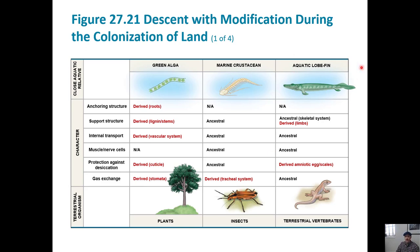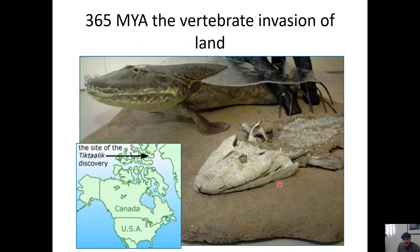When we look at the chordates, one of our nearest aquatic relatives already had a skeleton — we just changed fins into limbs. Internal transport, muscles, nerves, and gas exchange with air were already present. The new traits we evolved were scales to help prevent drying out and the amniotic egg. You can see these new traits highlighted in red, and notably, plants have far more derived traits than animals like ourselves.